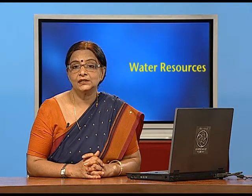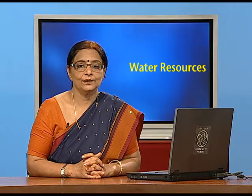There is a depletion of groundwater resources and a decline in the groundwater table — the level till which we get water. There is intensive irrigation in Punjab, Haryana, and western Uttar Pradesh because these are the states where a lot of agricultural practices are going on.